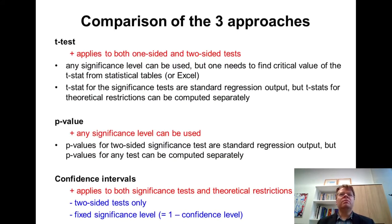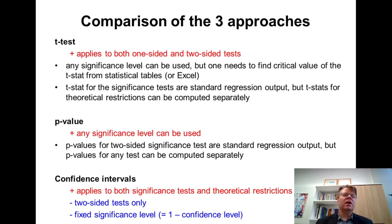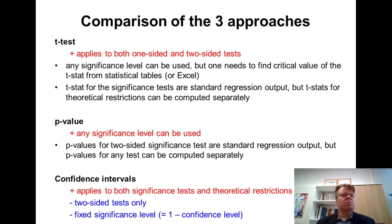At this point, I'll make a short summary and compare the advantages and disadvantages of the three approaches we have considered. Starting with the t-test: the biggest advantage is that the t-test can be used for both one-sided and two-sided tests. The p-value and confidence intervals provided in standard regression output cannot be used for one-sided tests, so if you want to use one-sided tests, you need to use the t-statistic. In principle, the t-statistic can use any level of significance alpha, but every time we change the significance level, we need to go back to statistical tables or Excel to find the critical values.